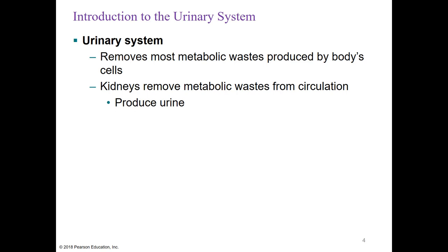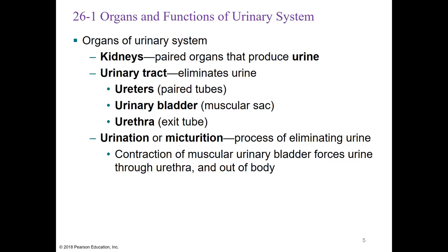The organs of the urinary system include the kidneys, which are paired organs that produce urine, and the urinary tract, which consists of three things that eliminate urine from the body: the ureters (there are two), a bladder (a muscular sac), and one urethra (an exit tube). Urination or micturition is the process of eliminating urine, accomplished by contracting the muscular urinary bladder to force urine through the urethra and out of the body.